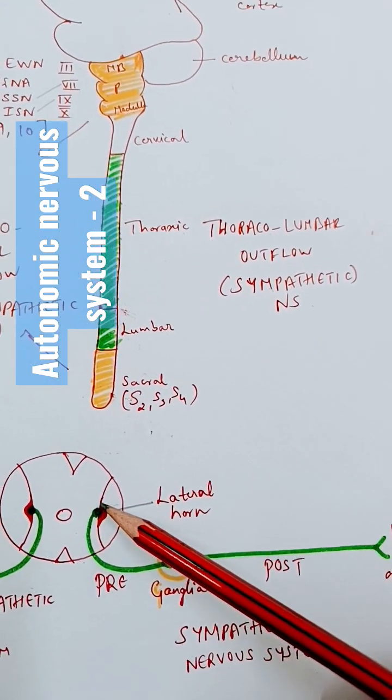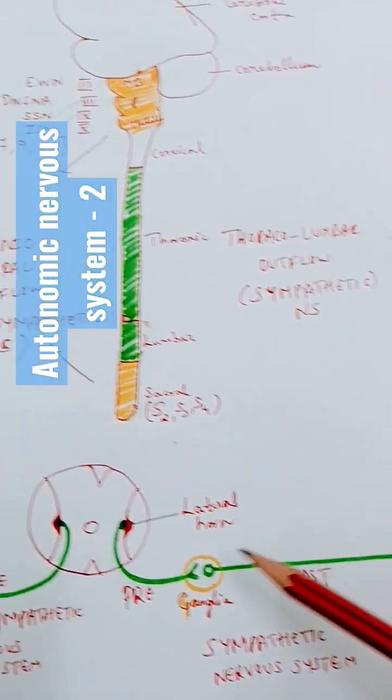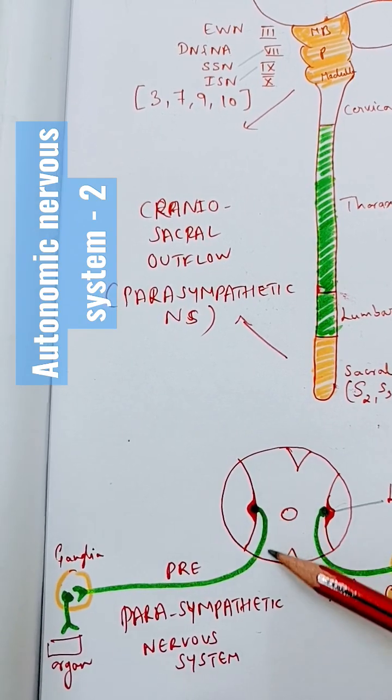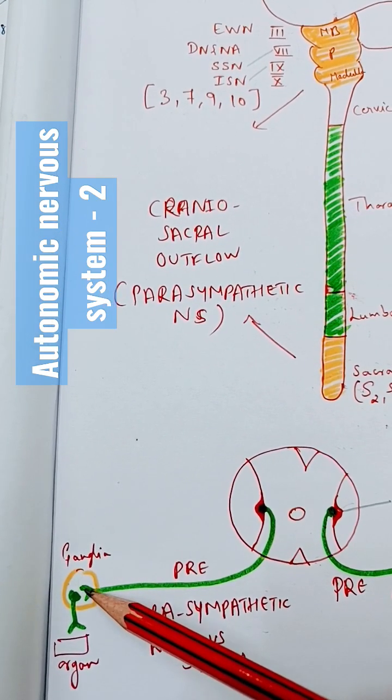If you compare with the parasympathetic nervous system, the preganglionic nerves are very long. They end in ganglia which is very close to the organ it supplies. From there a postganglionic neuron arises and supplies the organ.